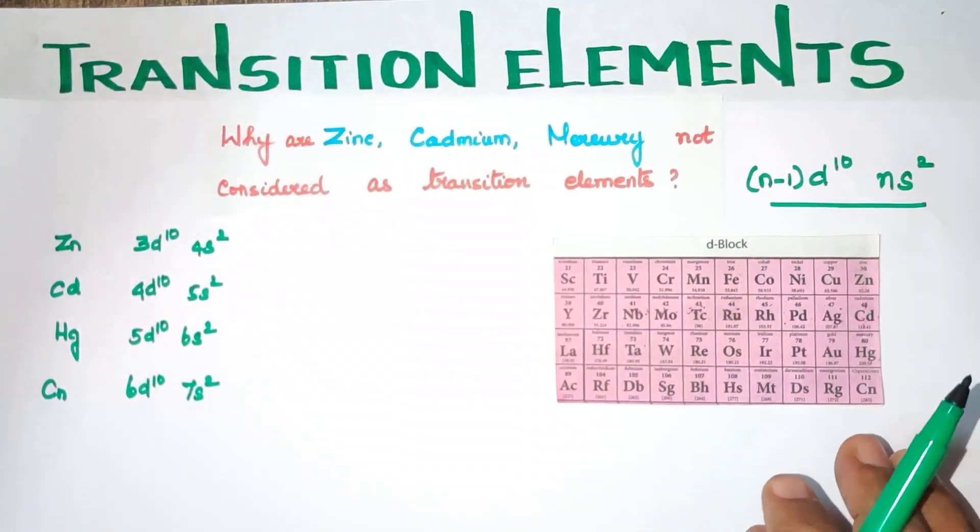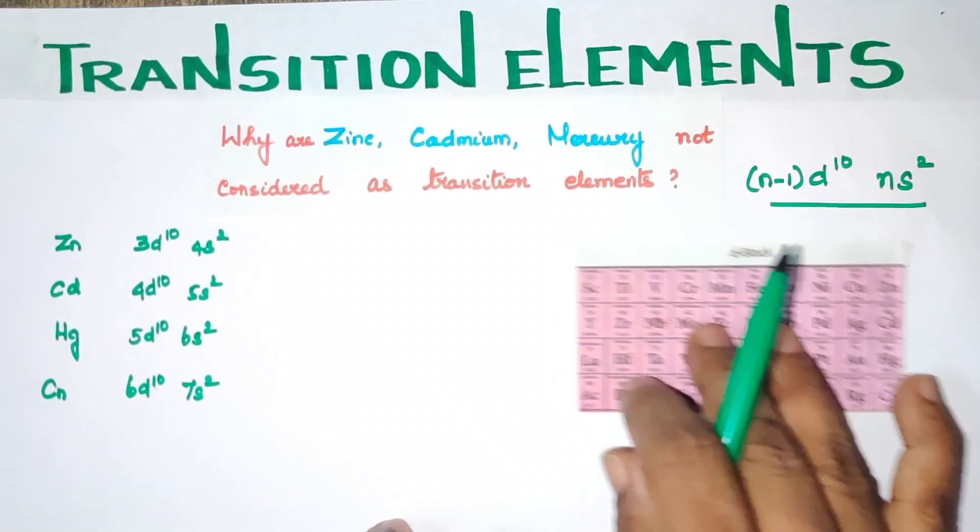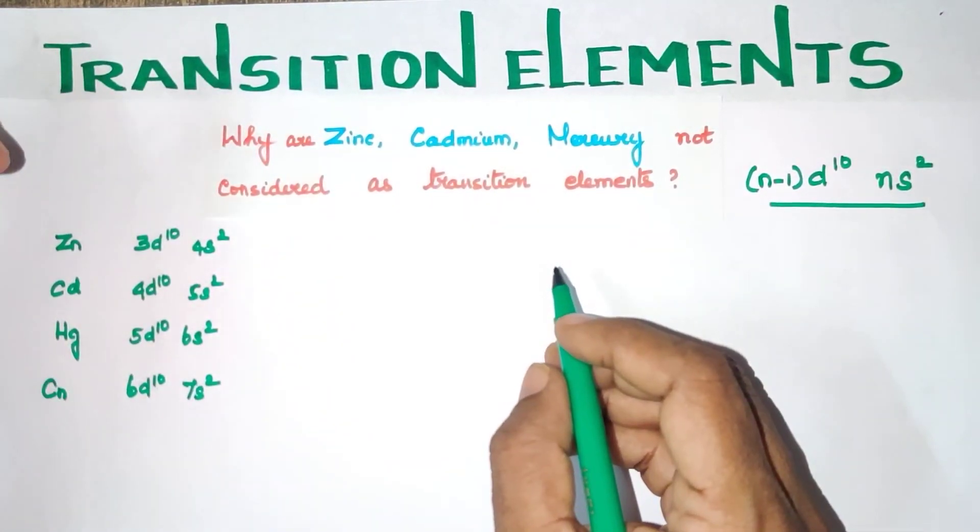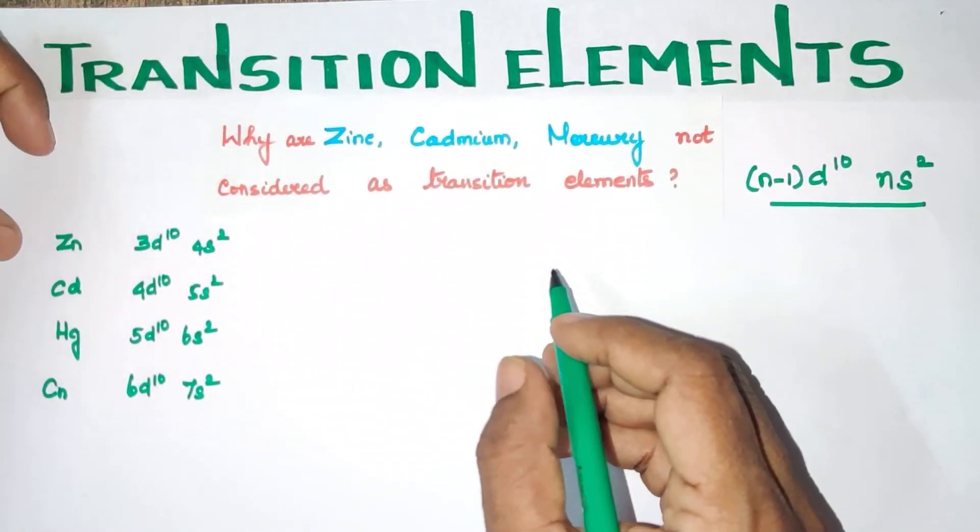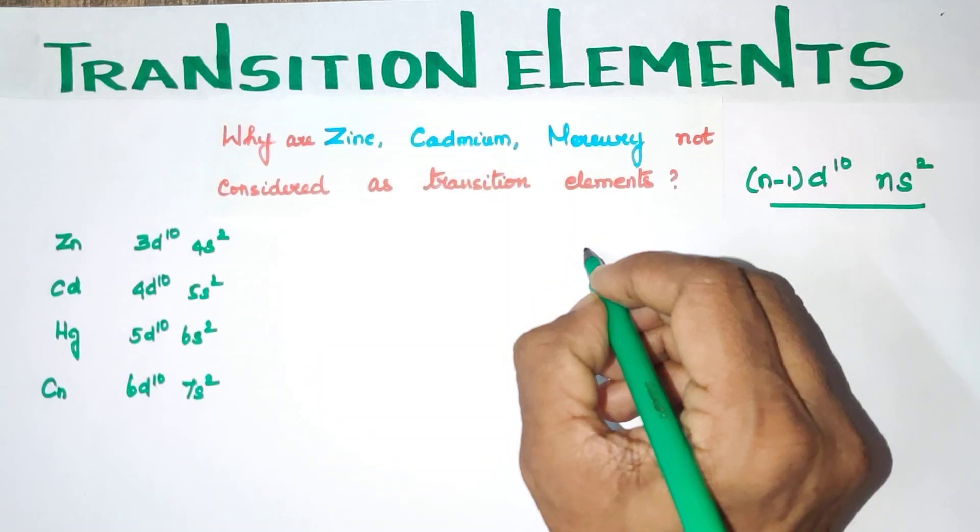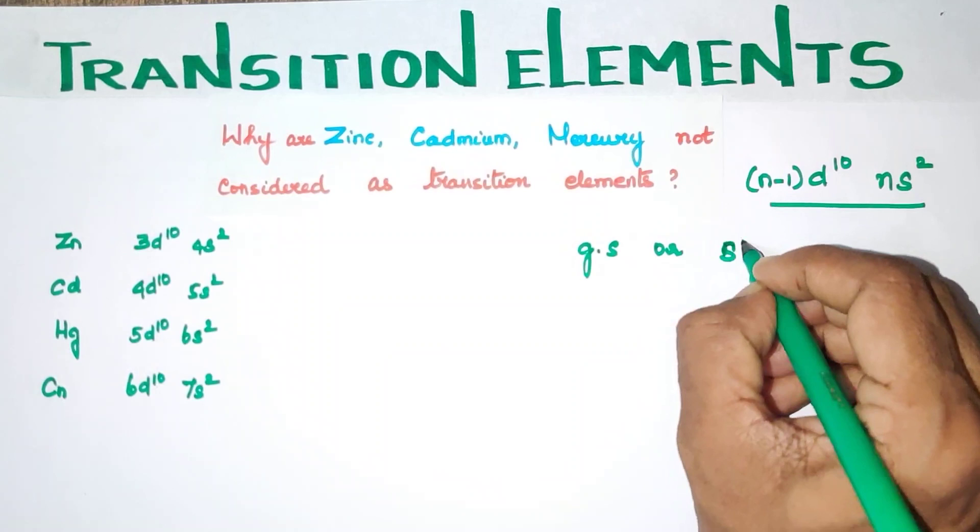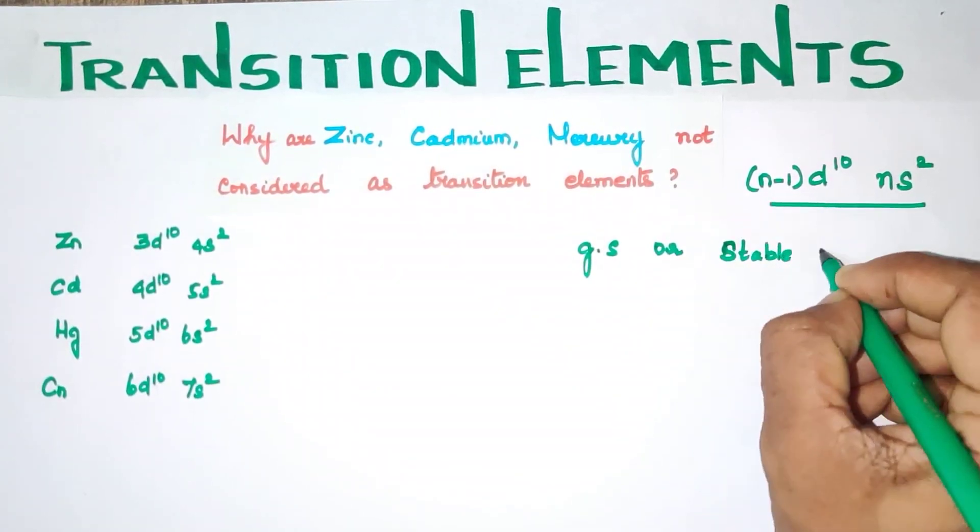But, the Transition Elements - there is a definition of IUPAC. So on the definition, D-Block Elements, the elements in ground state or more stable oxidation state.